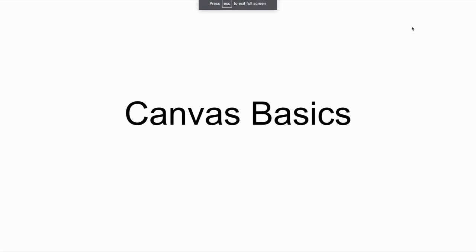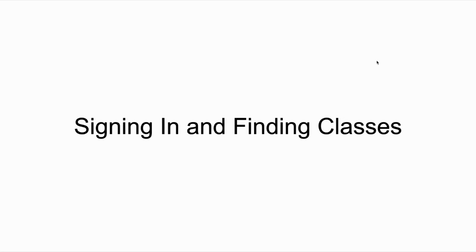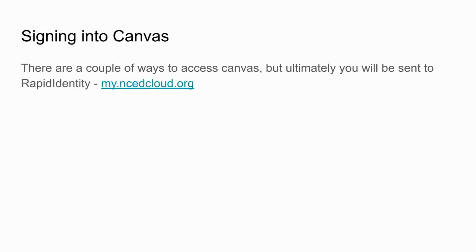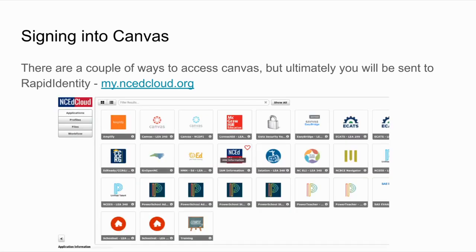Hello and welcome to Canvas Basics for WSFCS and more specifically West Forsyth High School. Today we're going to be learning about Canvas Basics and we're going to start off by signing in and finding your classes. There are a couple of ways to sign into Canvas, but ultimately you have to go through rapididentity, which is my.ncidcloud.org, and when you sign in you will see a dashboard and we are looking for Canvas right here.